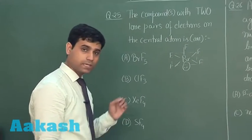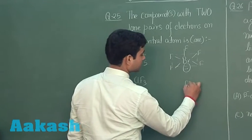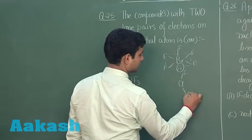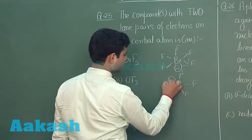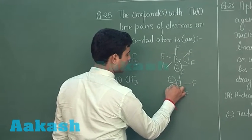In case of ClF3, it has bent T structure with two lone pairs on chlorine atom.